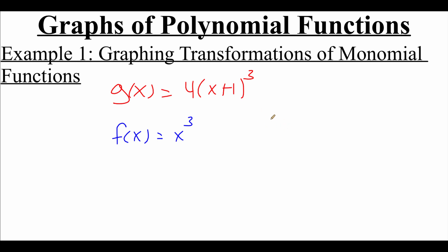What I want to look at first is that plus 1 that's happening inside of parentheses. When we've got a plus or minus happening inside of a set of grouping symbols, that's a horizontal shift. Horizontal shifts are always backwards of what we think they would be. So this plus 1 inside of our parentheses is going to shift the cubic graph left one space.